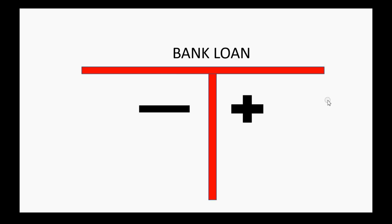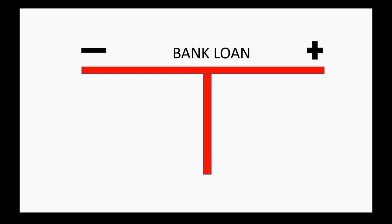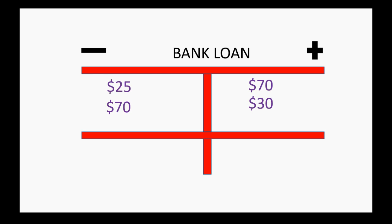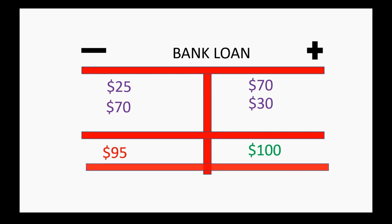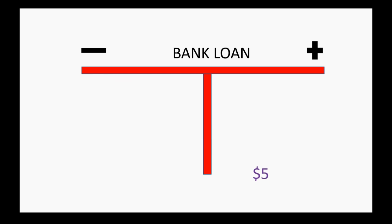You use the same procedure to foot a liability account like a bank loan. A bank loan is minus for debit and plus for credit, so borrowed money goes on the credit side and payments go on the debit side. At month end, you find the total credits and total debits. If credits are slightly more, the resulting balance goes on the credit side — for example, a $5 credit balance that begins the next month.